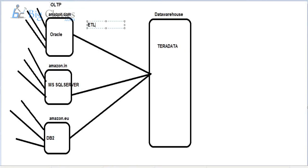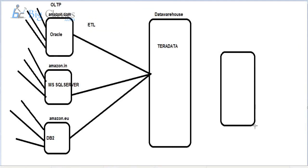ETL stands for: Extraction of data from a transactional system, Transform — which is modifying the data to your required format — and Load, which is loading the data into the data warehouse. Once we load the data, business users generate reports from the data warehouse with the help of BI tools. Using BI tools they analyze the data — understanding revenue in India, revenue in the US, and other business metrics.